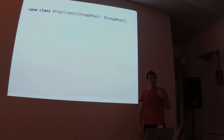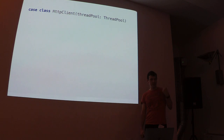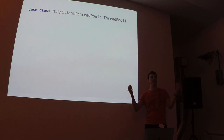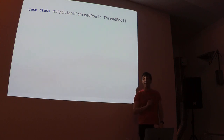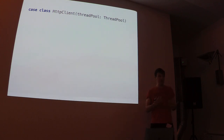One thing you get at functional programming conferences is this idea that you can use the reader pattern. Some talks say: dependency injection is so 80s and 90s — now you have the reader pattern, that's what you should use. So I thought, maybe I should go that way. What happens if we use a reader pattern?